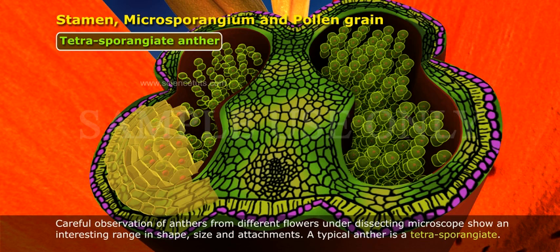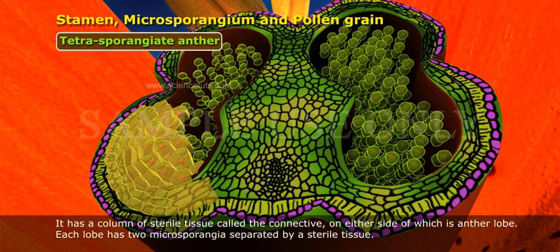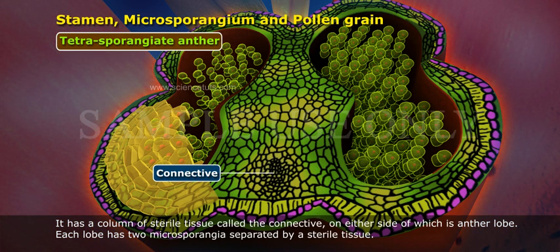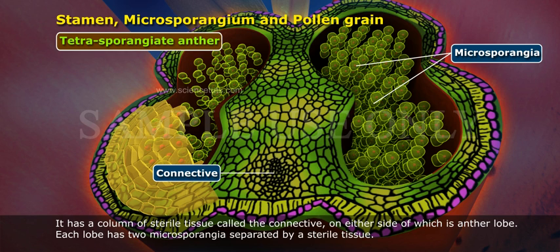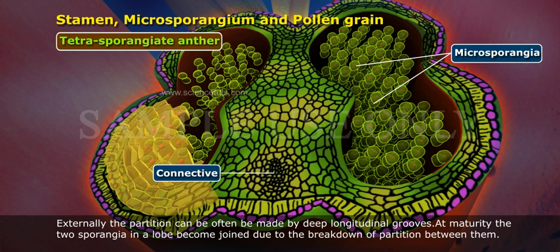size and attachments. A typical anther is tetrasporangiate. It has a column of sterile tissue called the connective, on either side of which is an anther lobe. Each lobe has two microsporangia separated by a sterile tissue. Externally, the partition can often be marked by deep longitudinal grooves.